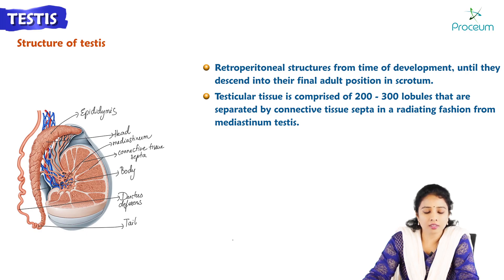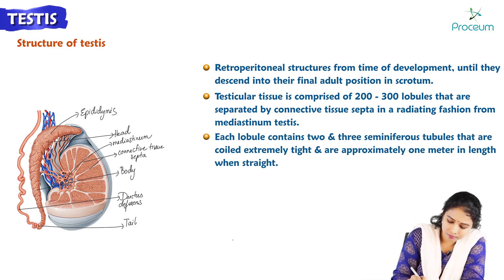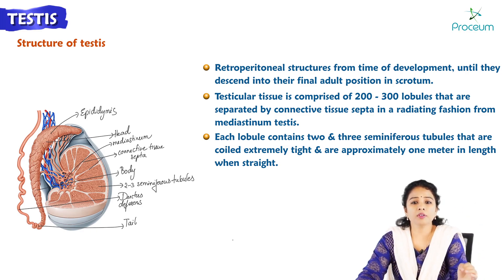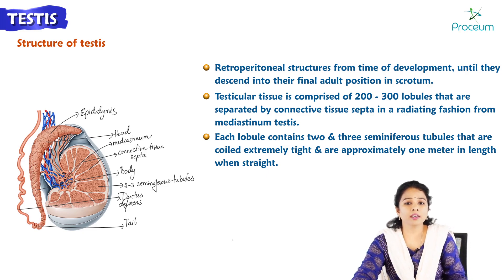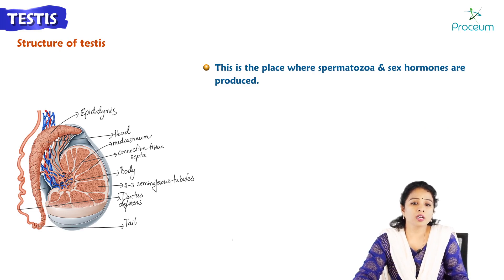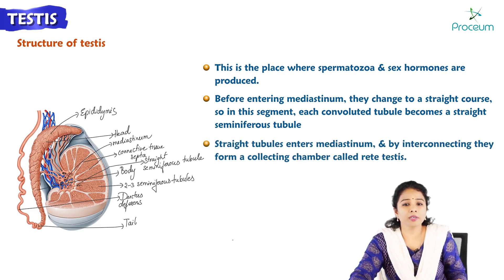Within each lobule there are coiled tubules called seminiferous tubules, with each lobule containing 2 to 3 seminiferous tubules. These seminiferous tubules are extremely tightly coiled and are approximately 1 meter in length when straightened — this is where spermatozoa and sex hormones are produced. Before entering the mediastinum, each convoluted tubule becomes a straight seminiferous tubule. These straight tubules enter the mediastinum, interconnecting to form a collecting chamber called the rete testis.